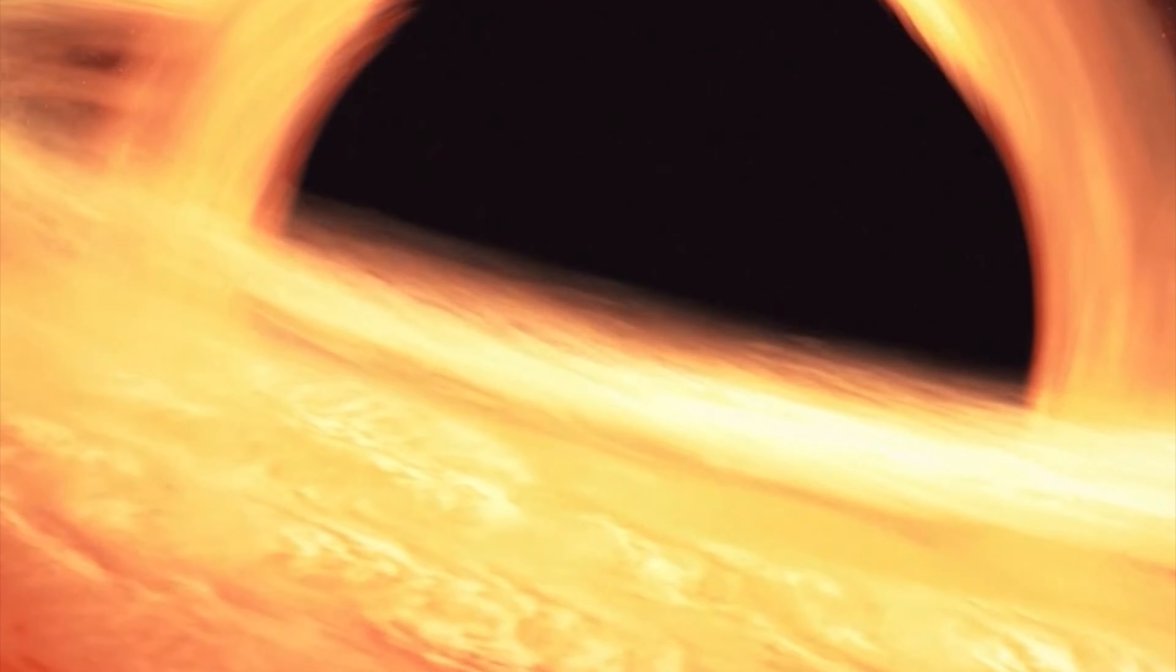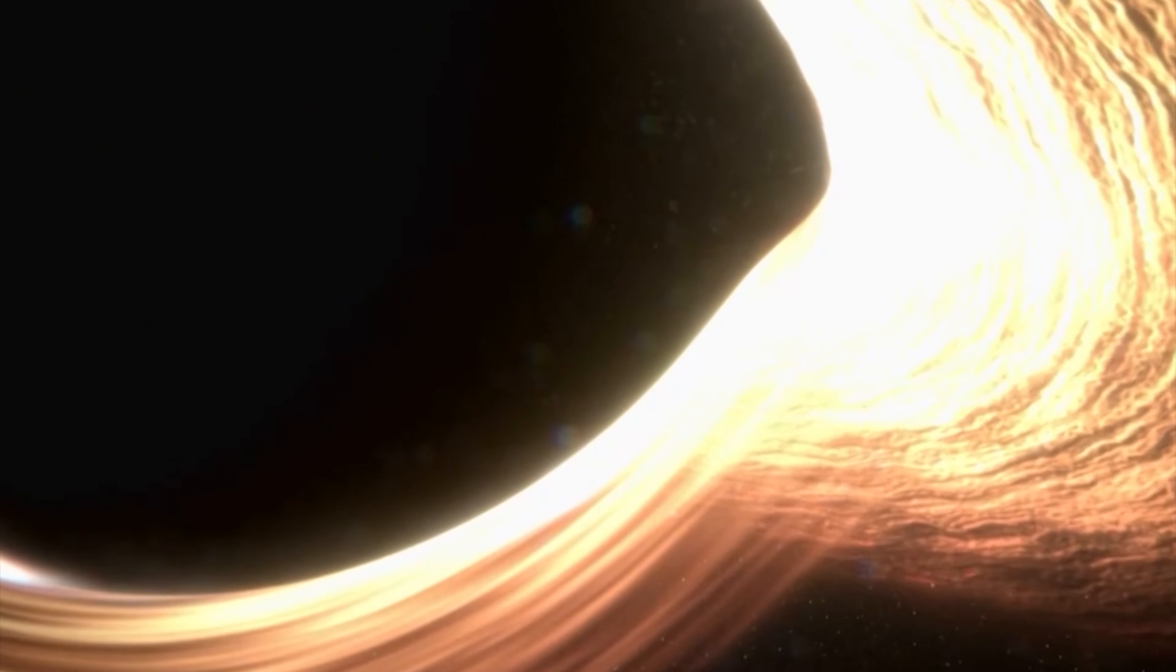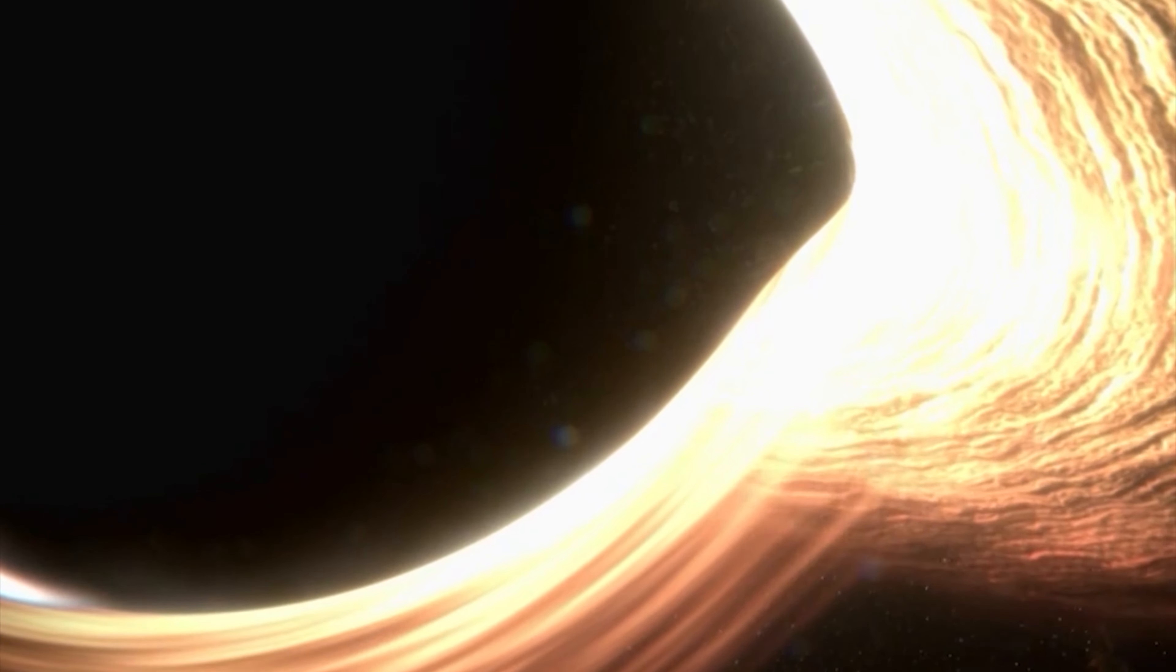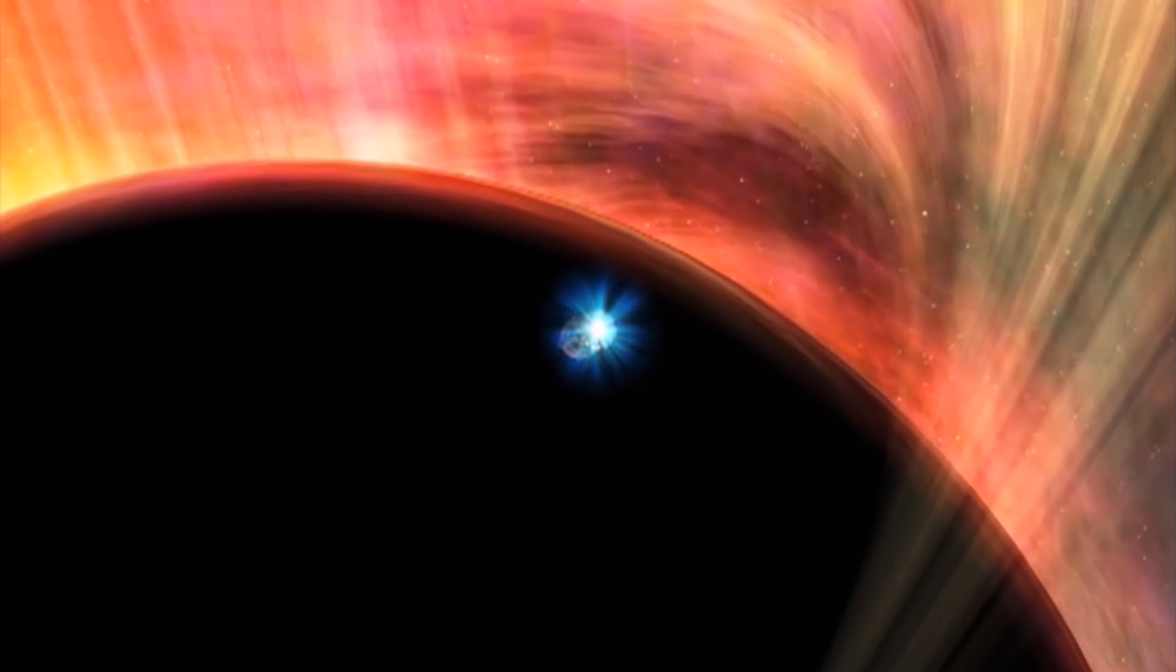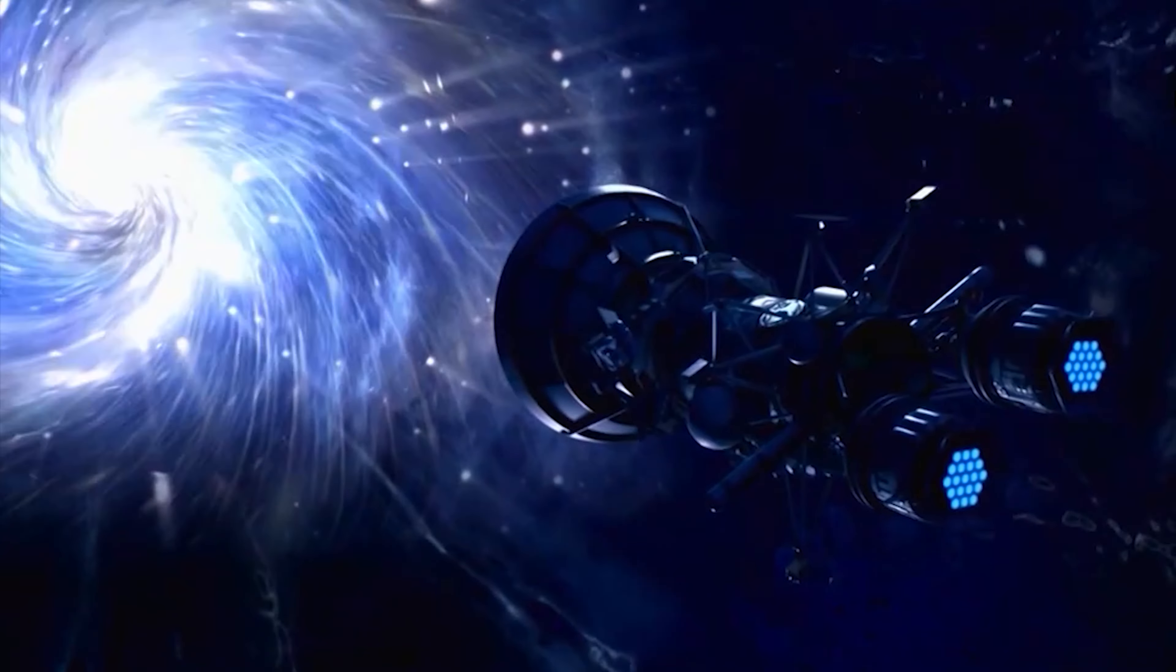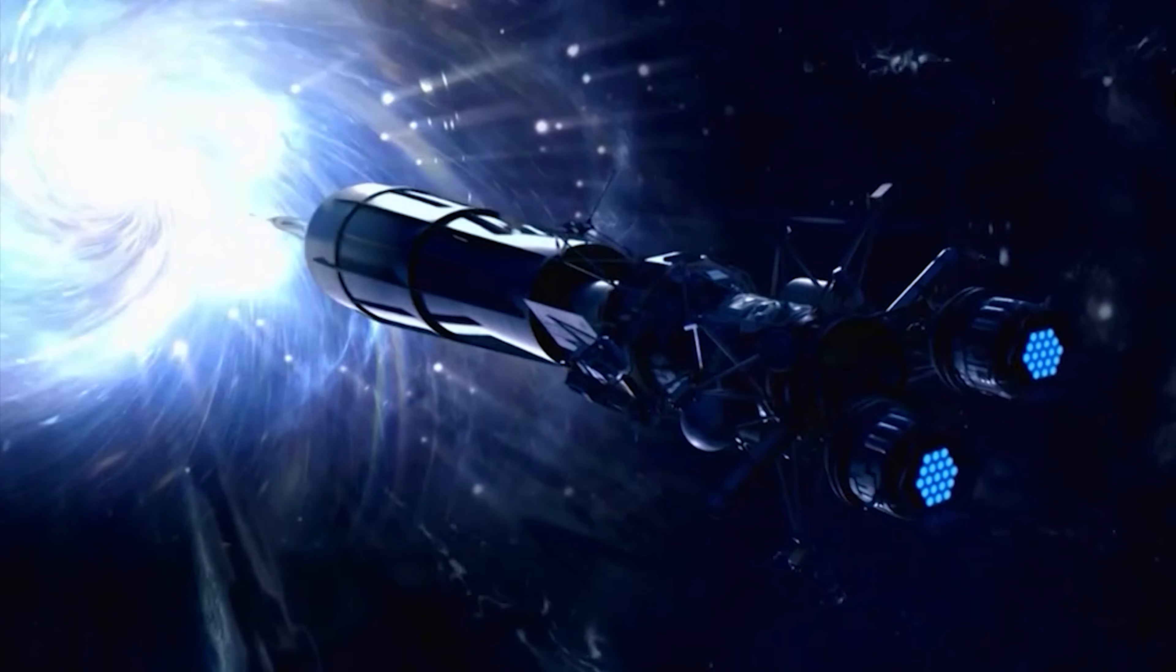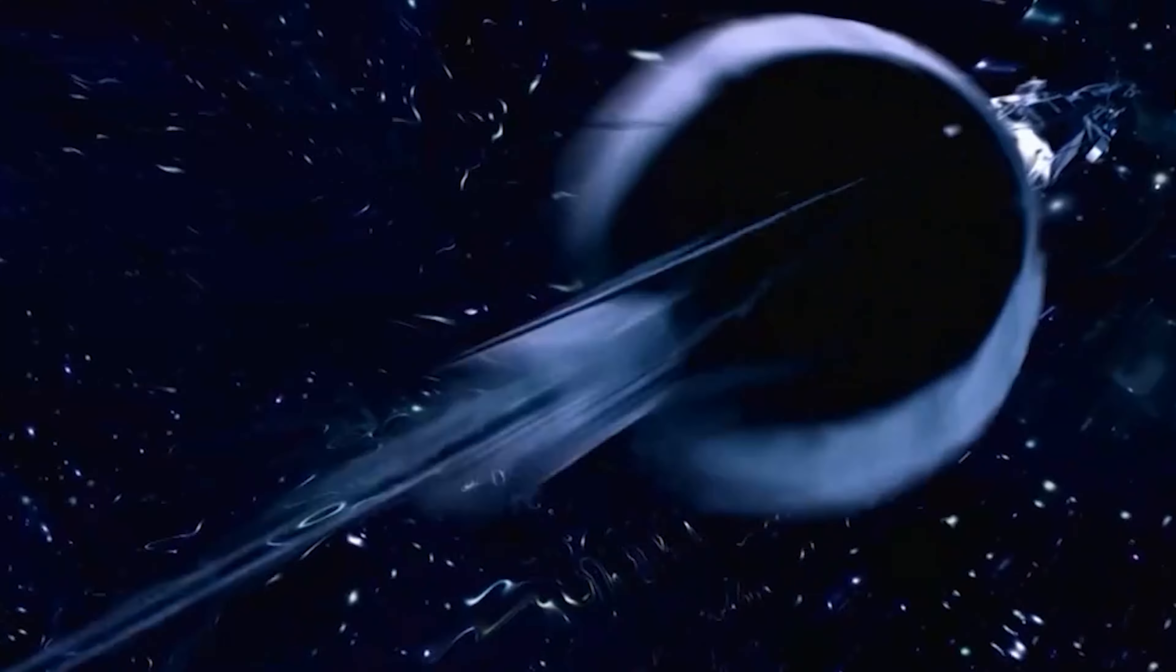Every black hole has an event horizon. The event horizon is the boundary of space. Once a celestial body crosses it and approaches the black hole, it cannot come back. It has no choice but to fall toward the singularity at the center of the black hole, where all the mass of the gravitationally collapsed black hole is concentrated.